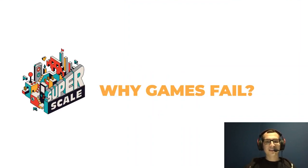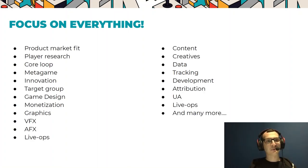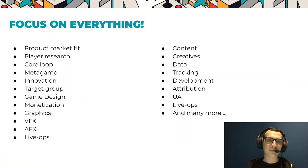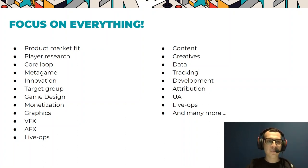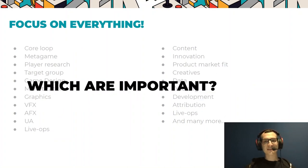When building a product, you need to focus on everything — player research, product-market fit, core loop, metagame, innovation, game design, monetization, graphics, content, and data. But not all of these are created equal. Some areas contribute more to success than others. The question is: which of these should you really be focusing on, and which are less important?